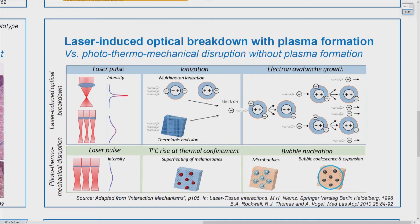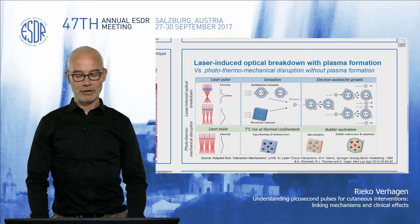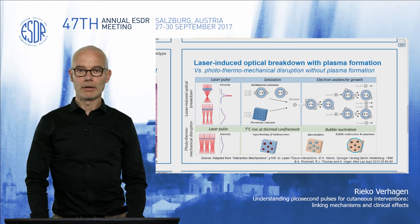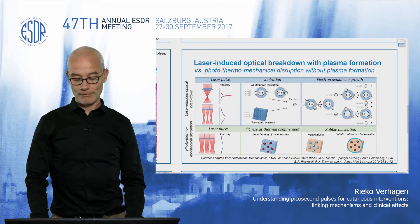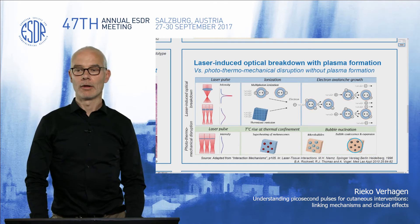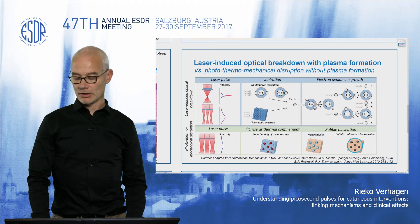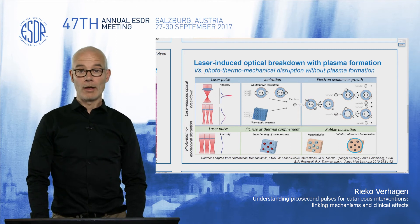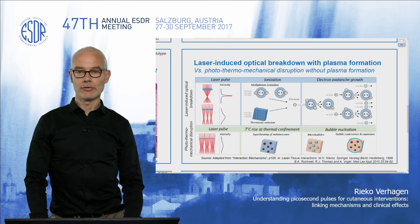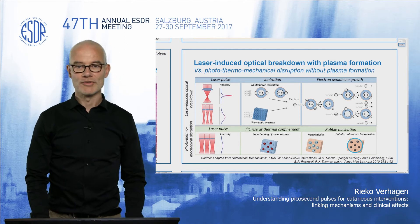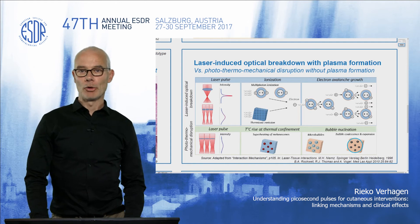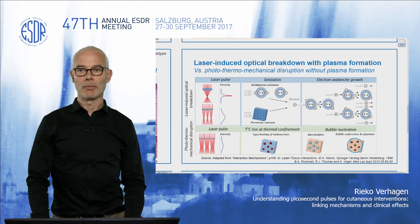At lower intensities and mildly absorbing structures inside the skin, one can have thermionic emission, which basically means that particles with relatively weak absorption will rise to a very high temperature — typically around 1500 Kelvin — and in that way create free electrons through thermionic emission. These free electrons can again undergo avalanche ionization, causing a thermionically initiated laser induced optical breakdown. At even lower intensities, certain particles — for instance melanosomes inside the skin — will overheat, reaching the boiling point of the surrounding tissues, creating micro-bubbles and microcavitation.